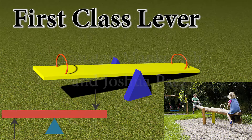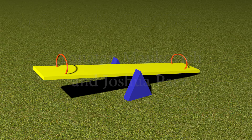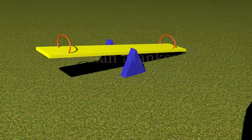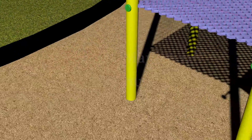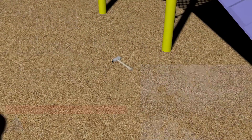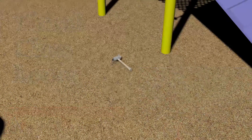In a first class lever, the effort is applied on one side of the fulcrum and the load on the other side. In a third class lever, the input force is in between the output force and the fulcrum.